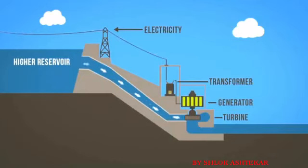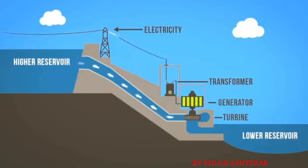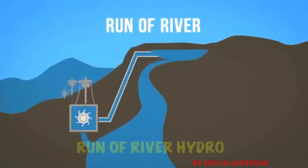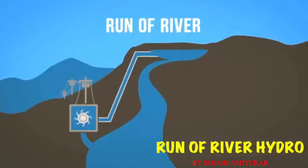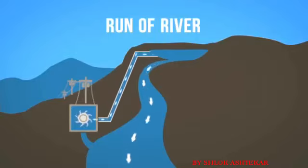Some dams also contain an additional reservoir at their base where water is stored to be pumped to the higher reservoir for release when electricity is in demand. This is referred to as pumped storage hydro. The second form of hydroelectricity production is run of river hydro, which still uses turbines and generators but relies on natural water flow rates of rivers, diverting just a portion of the water through turbines.